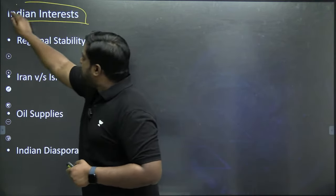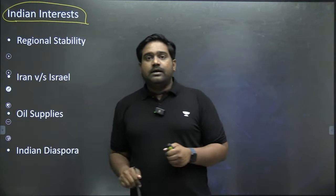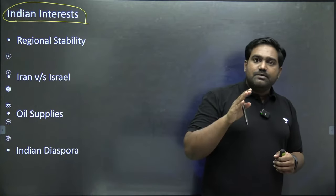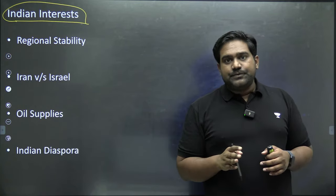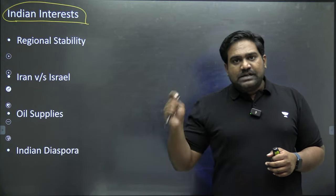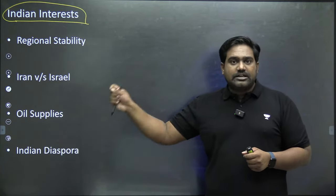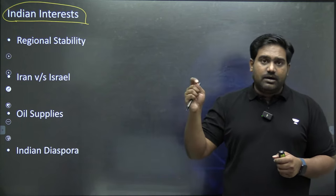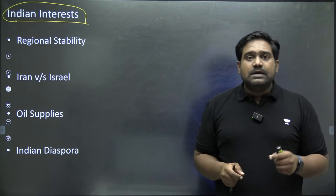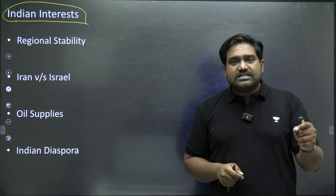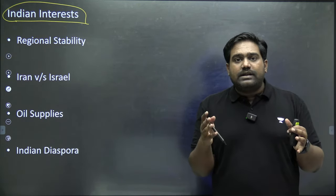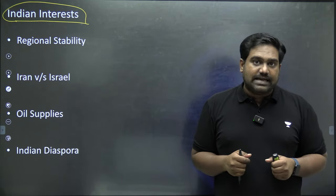Coming to the last point: what is in it for India? What are India's concerns? The moment the escalation started, India started making statements. On 1st April, when the Iranian mission was targeted by airstrikes in Damascus, India issued a statement calling for restraint on both sides.